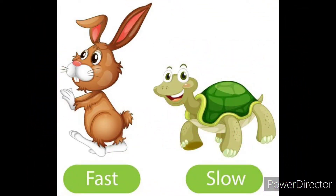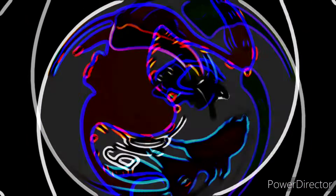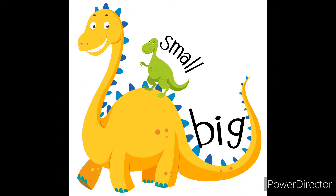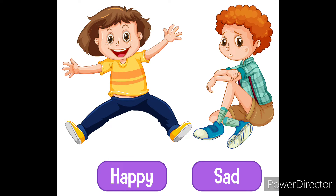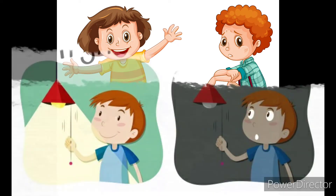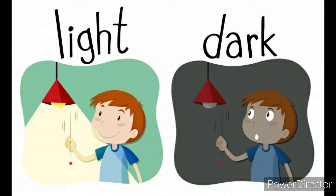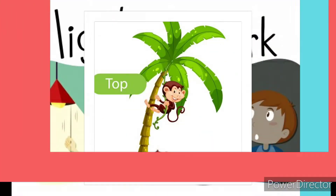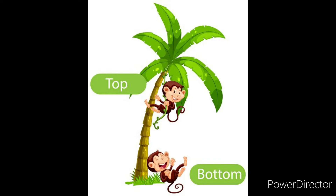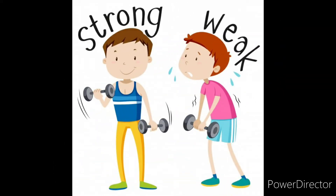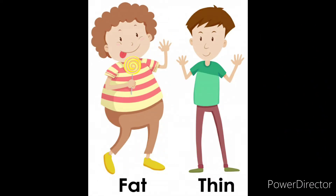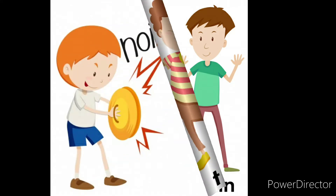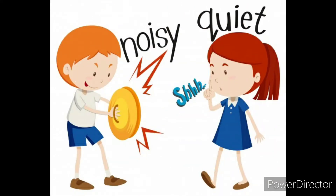Fast, slow. Big, small. In, out. Happy, sad. Light, dark. Top, bottom. Strong, weak. Fat, thin. Noisy, quiet.